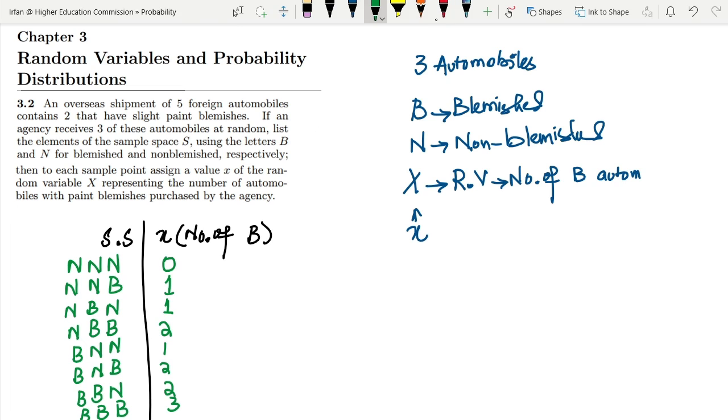And the value of X would be three. This is the solution of the question in which we have seen the number of blemished cars as the random variable. On the basis of it, we have described the solution. This is the illustration of how to find out the random variables and that is the essence of the word random variables.